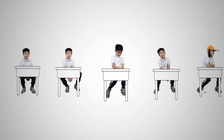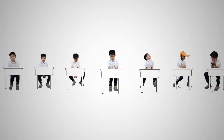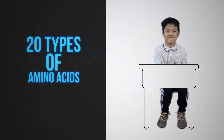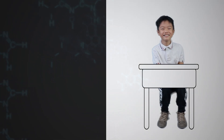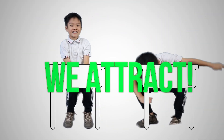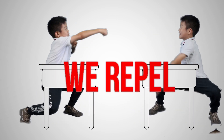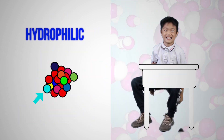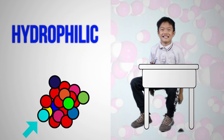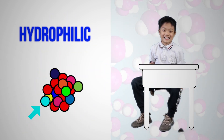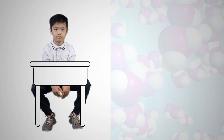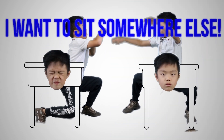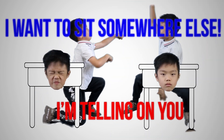You can think of amino acids as students in a classroom. In total, there are 20 types of students. Each have their own personalities and needs. Some are friends with one another, others frenemies. Some want to stay on the outside near the water molecules. Others hate water and stay on the inside.